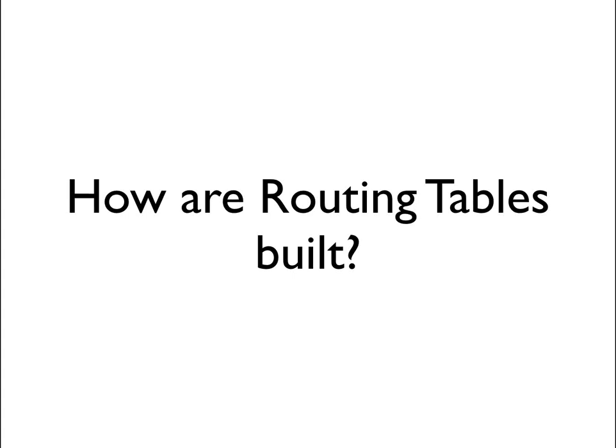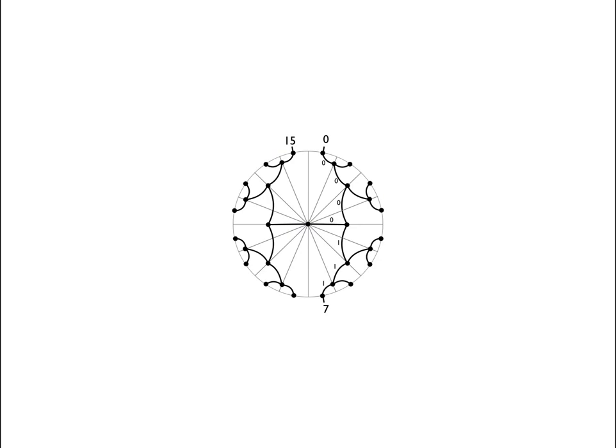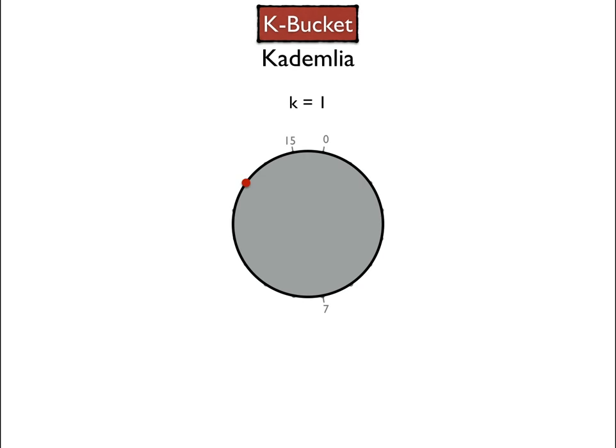Let's now see how routing tables are built as the network is operating. Let's bring back John using the representation we've seen. John's routing table is initially empty. To construct the routing tables as a node learns of other nodes on the network, we use K buckets. K buckets are used as a means of deciding which new node we're learning about should be added or not to our current routing table. We will first perform the bucket operations and then see why they allow the construction of scalable routing tables.